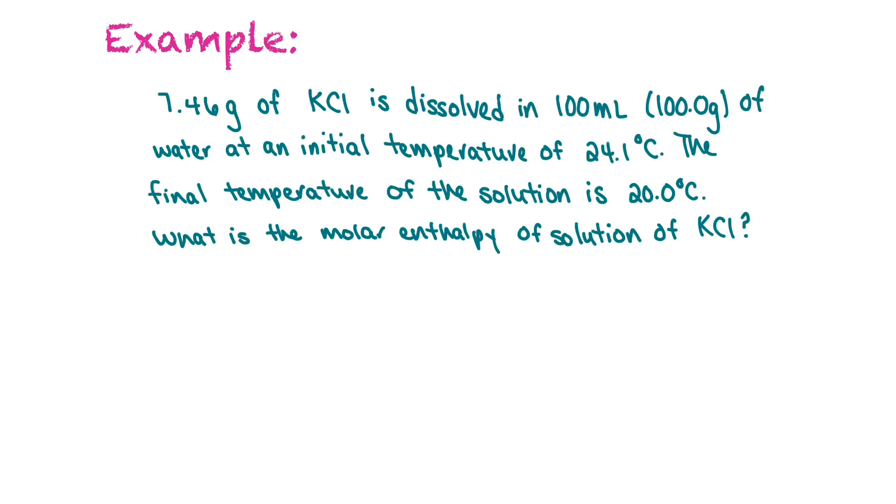We're going to learn how to solve for molar enthalpy with the following example. 7.46 grams of calcium chloride is dissolved in 100 milliliters, that's 100.0 grams of water, at an initial temperature of 24.1 degrees Celsius. The final temperature is 20 degrees Celsius. What is the molar enthalpy of solution of potassium chloride?